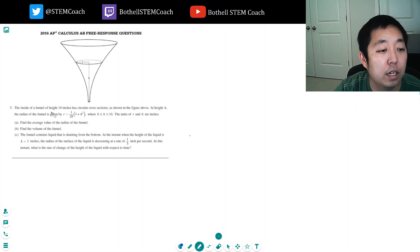So the inside of a funnel of height 10 inches has circular cross-sections as shown above. At height h, the radius of the funnel is given by this, where 0 is less than h equal to 10, the units of r and h are inches. Find the average value of the radius of the funnel.